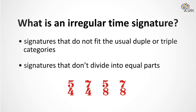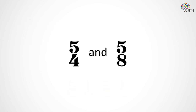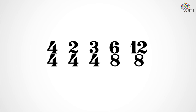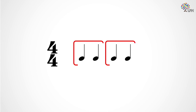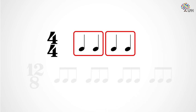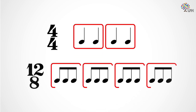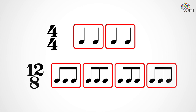In Music Theory 1, we've learned about time signatures like 4/4, 2/4, 3/4, 6/8, and others where the top number divides into equal parts or little beats. In 4/4, we can divide each measure into two pairs of two quarter notes, and in 12/8 we divide each measure into four groups of three eighth notes. In each case, the little beats within the big beat are the same length.